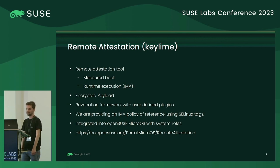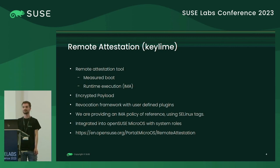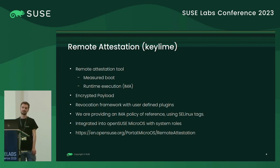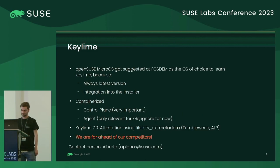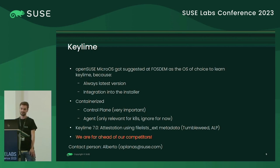For OpenSUSE and also SLEE, KeyLime is packaged, there is upstream work done, and currently you can install it with system roles fairly simply using the DVD. You can install the agent for the client system or the verifier that pushes the payloads and manages the clients. It's in such a good state that upstream basically treats MicroS as the reference implementation and distro for KeyLime currently.